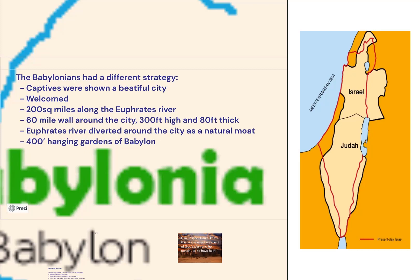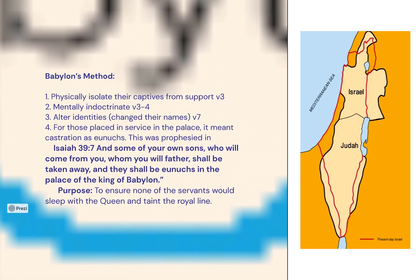There was reportedly a 400-foot hanging garden in the city of Babylon, even though there has been no verified proof of that hanging garden. So the Babylonian method of captive indoctrination was very different from the Assyrians'.